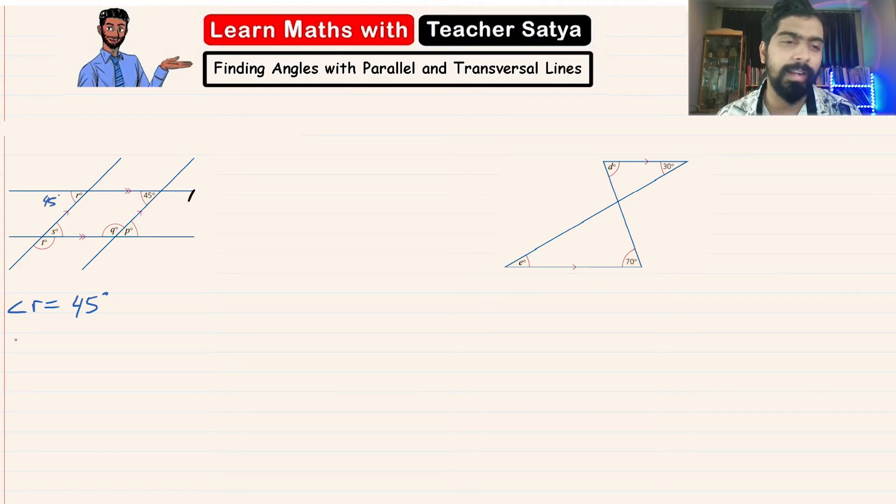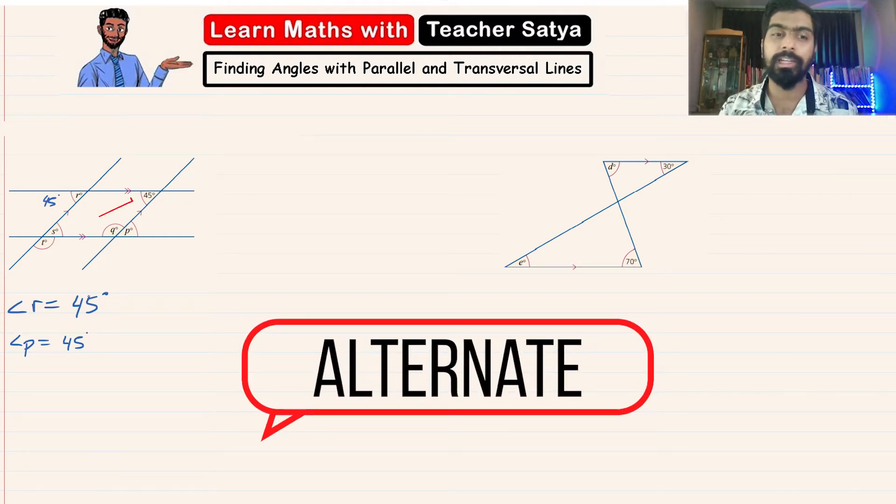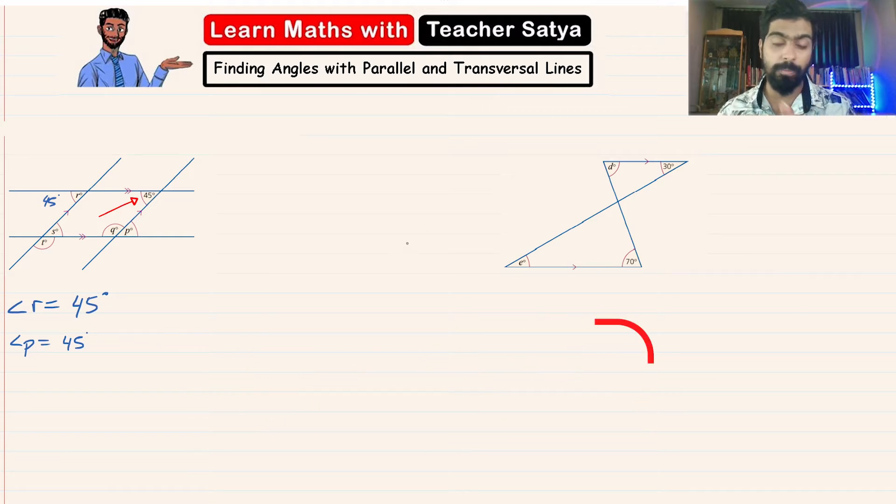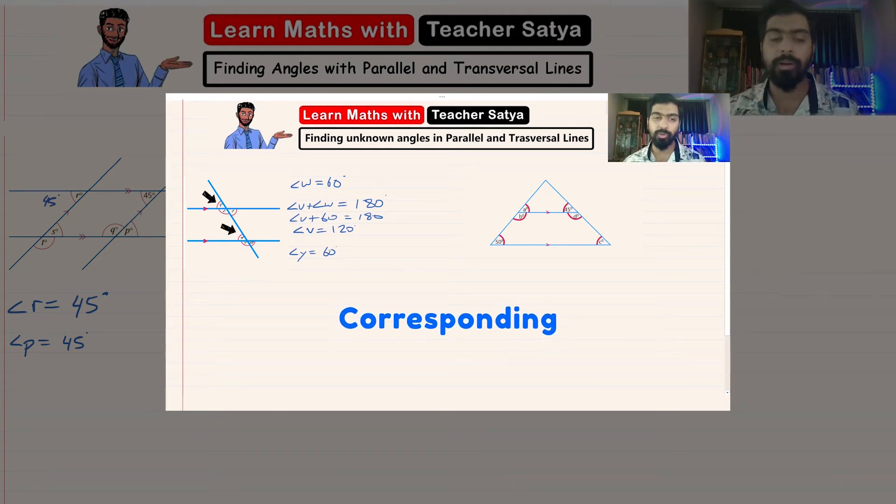Now let's go ahead and find angle P. Angle P is also equal to 45 degrees because angle P is the alternate angle of this 45 degrees. Now if you don't know about the angle properties, I will highly suggest you go to this video and watch the entire video and come back here.